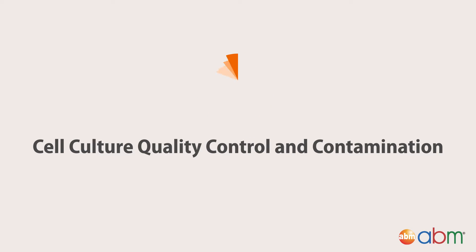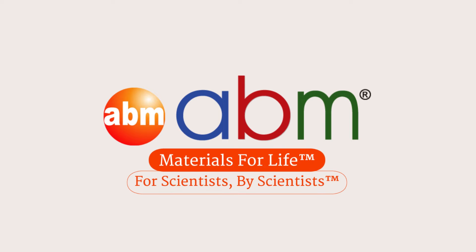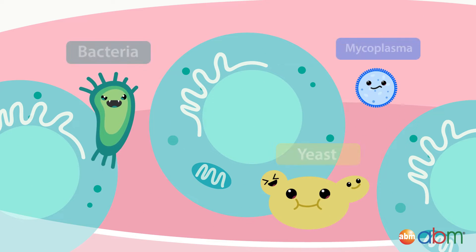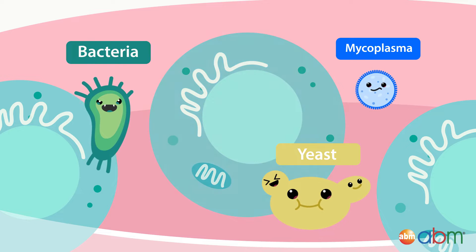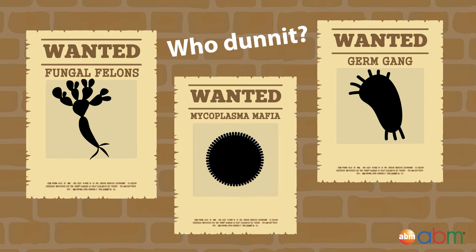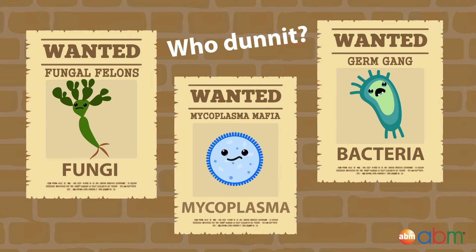In this video, you'll learn about the types of contamination, detection methods, and solutions to combat this prevalent issue that occurs in many cell culture labs. Contamination occurs when cells are exposed to foreign substances which compromise cell culture quality and can harm the cells. There are multiple types of biological contaminants. Today, we'll be focusing on the most common ones: bacterial, fungal, and mycoplasma contamination.